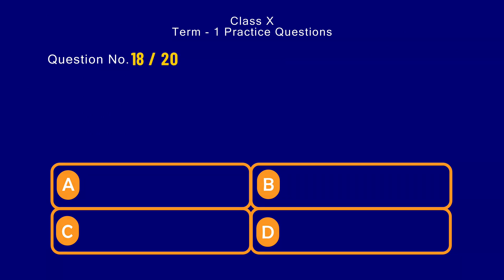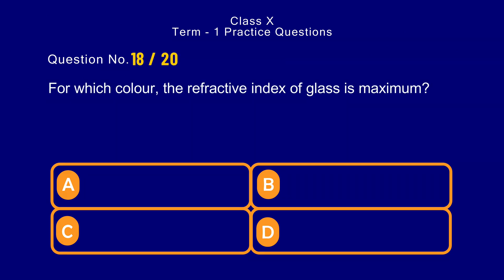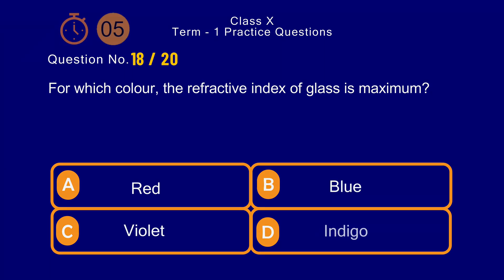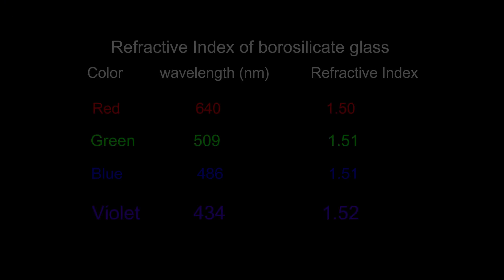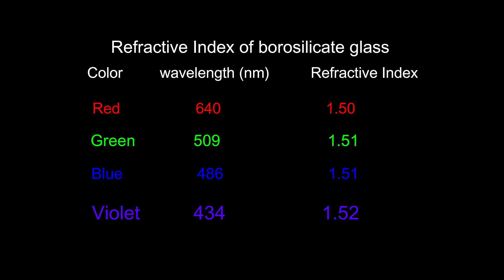Question number 18. For which color is the refractive index of glass maximum? Options: a) red, b) blue, c) violet, d) indigo. The correct answer is option c) violet. The refractive index of glass is maximum for violet color. That is why violet color bends maximum inside a glass prism.